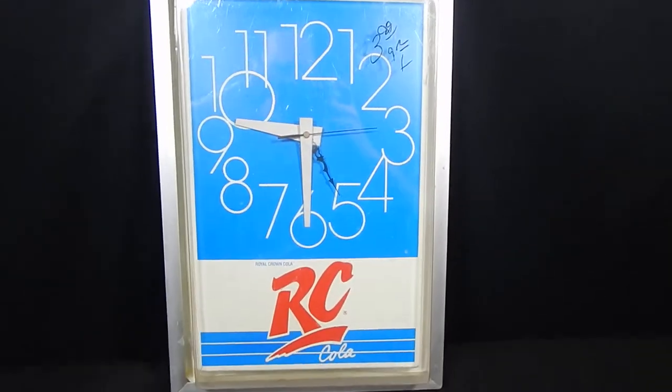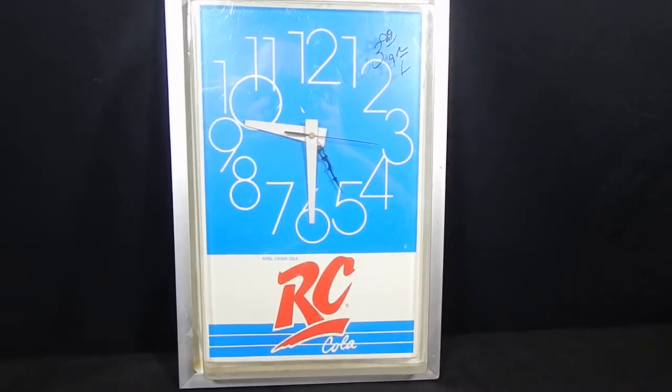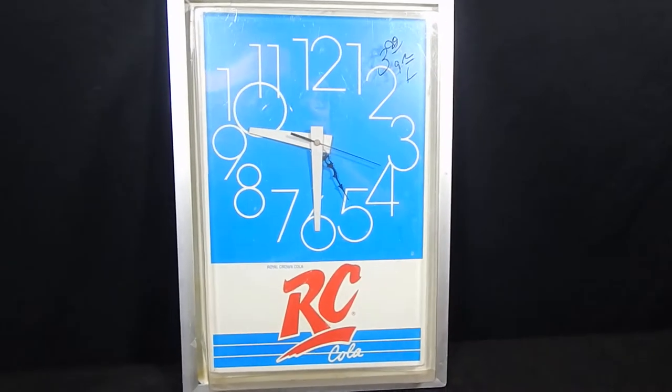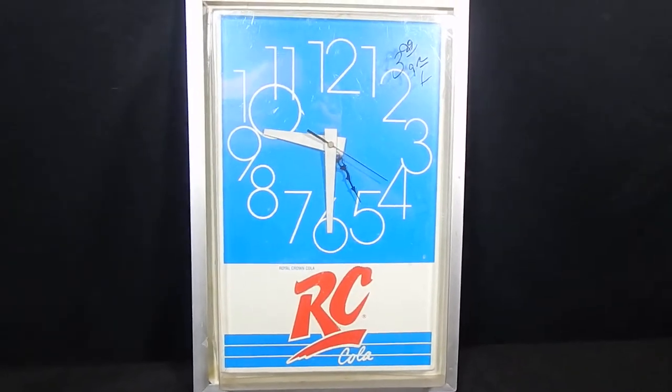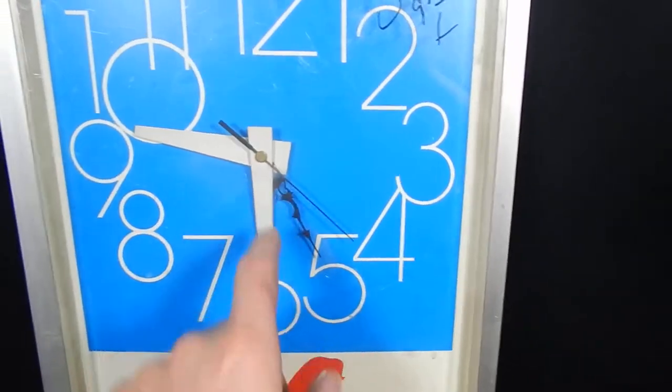All right, this is the Middleman LLC. This is the RC Cola clock. You can find it on eBay. I want to show you guys that this is working.